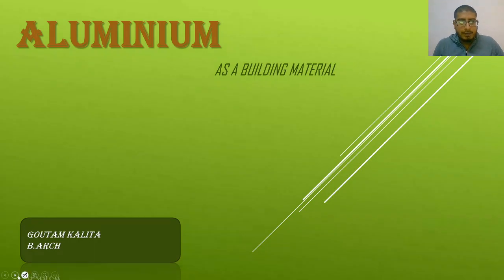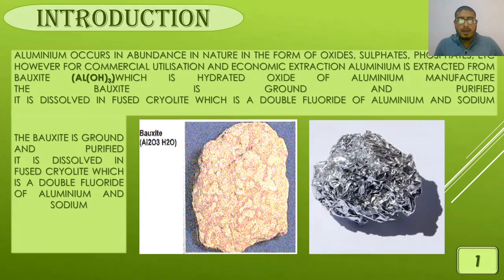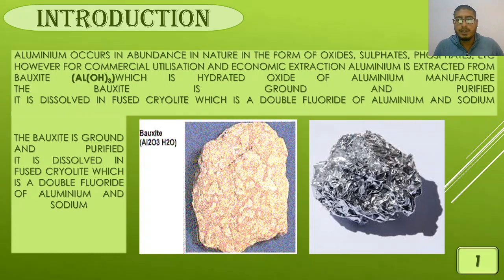Moving on to our first slide, there is an introductory part. Aluminum is very much abundant in nature, which is present in various forms of oxide, sulphate, phosphorus, etc. However, for commercial utilization, it is only extracted from the bauxite ore. For extraction of a metal from a mineral, certain criteria are taken into consideration, of which economic extraction is one of the major aspects, because economy plays an important role in maintaining the market value of the metal, which is further used in various industries.